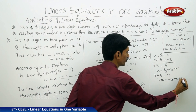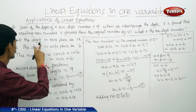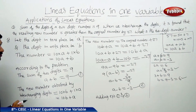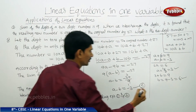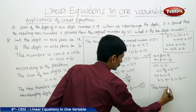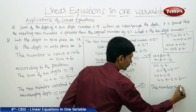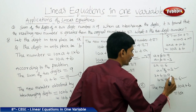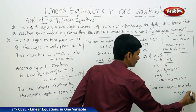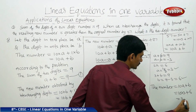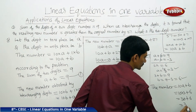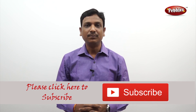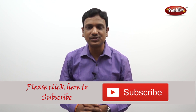So a equals 3 and b equals 6. The digit in tens place is 3 and in units place is 6. The number equals 10a plus b equals 10 into 3 plus 6 equals 30 plus 6 equals 36. The given two-digit number is 36. If you like this video, please give a thumbs up and subscribe to our channel to get more videos on CBSE syllabus.